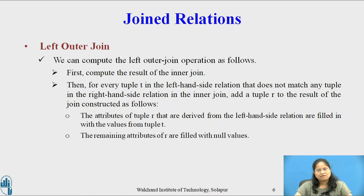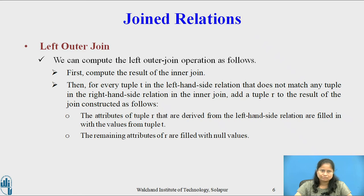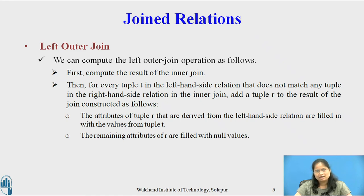We compute the left outer join operation as follows. First, compute the result of the inner join. Then, for every tuple t in the left-hand side relation that does not match any tuple in the right-hand side relation in the inner join, add a tuple r to the result constructed as follows: the attributes of r derived from the left-hand side relation are filled in with the values from tuple t, and the remaining attributes of r are filled with null values.